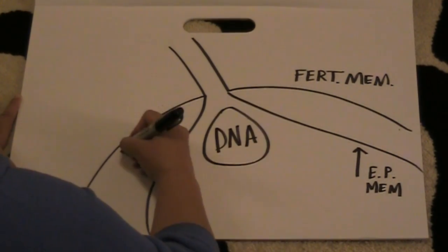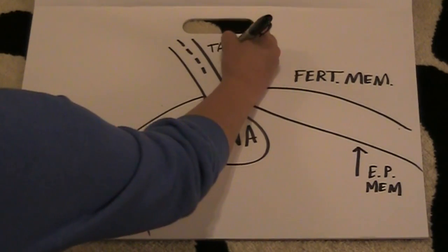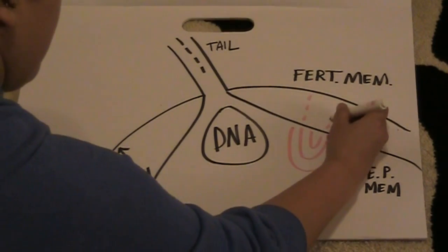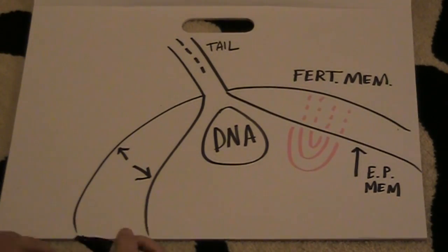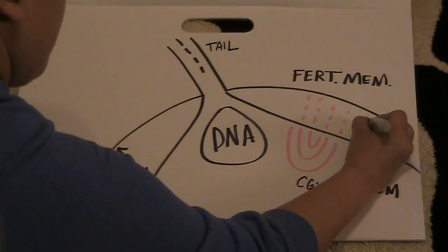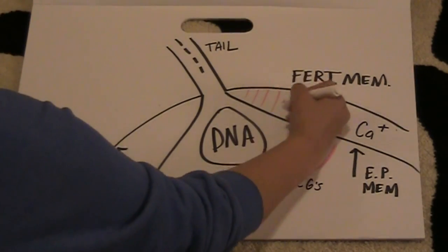Outer membrane is no longer the vitelline. It is now the fertilization. Space between the two has increased. Because of those cortical granules I told you about earlier, exocytosing, releasing the contents, raising the calcium concentration, speeding up restructure.